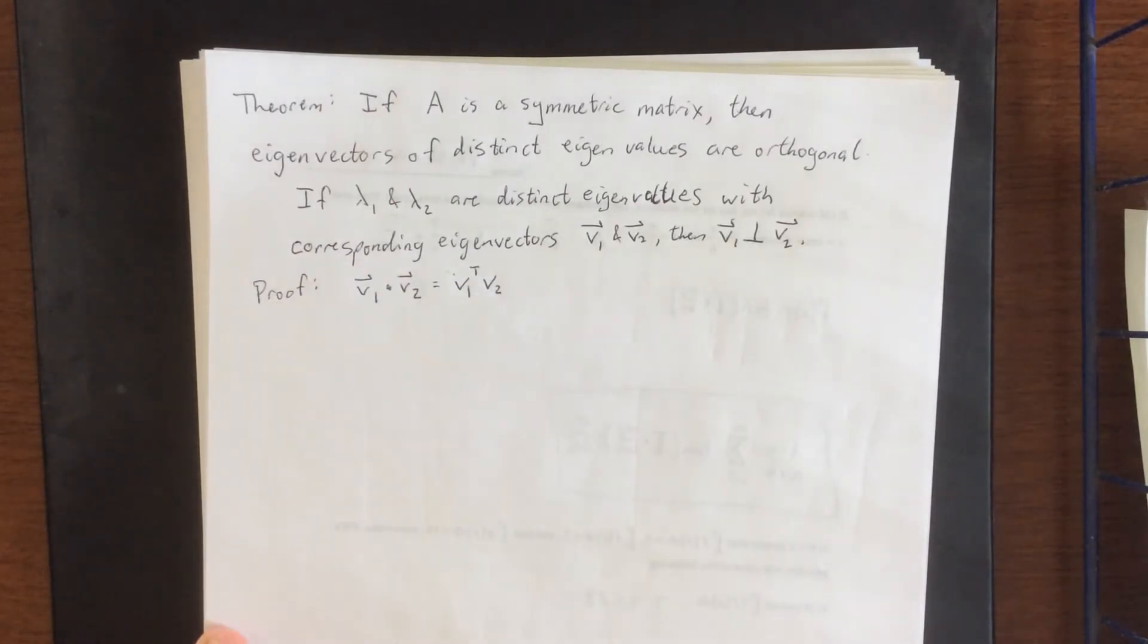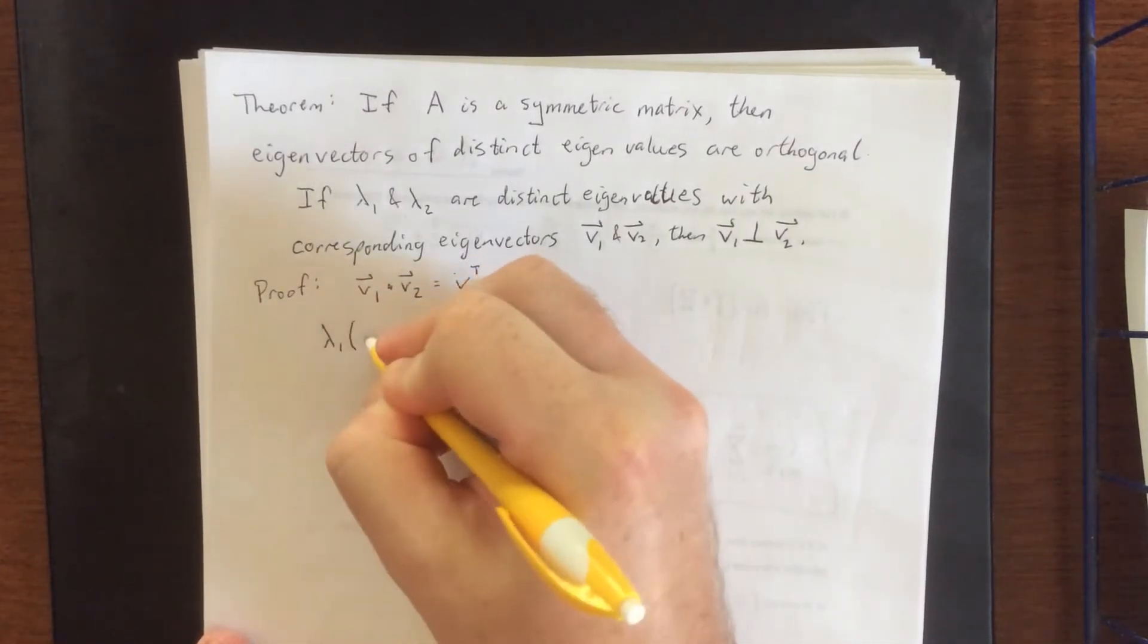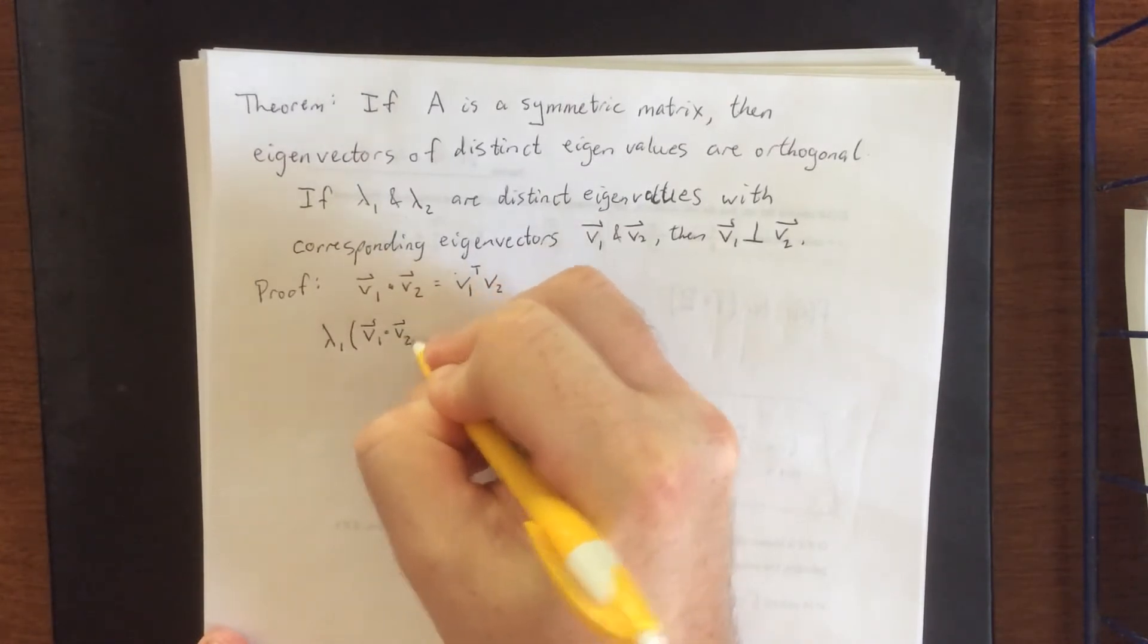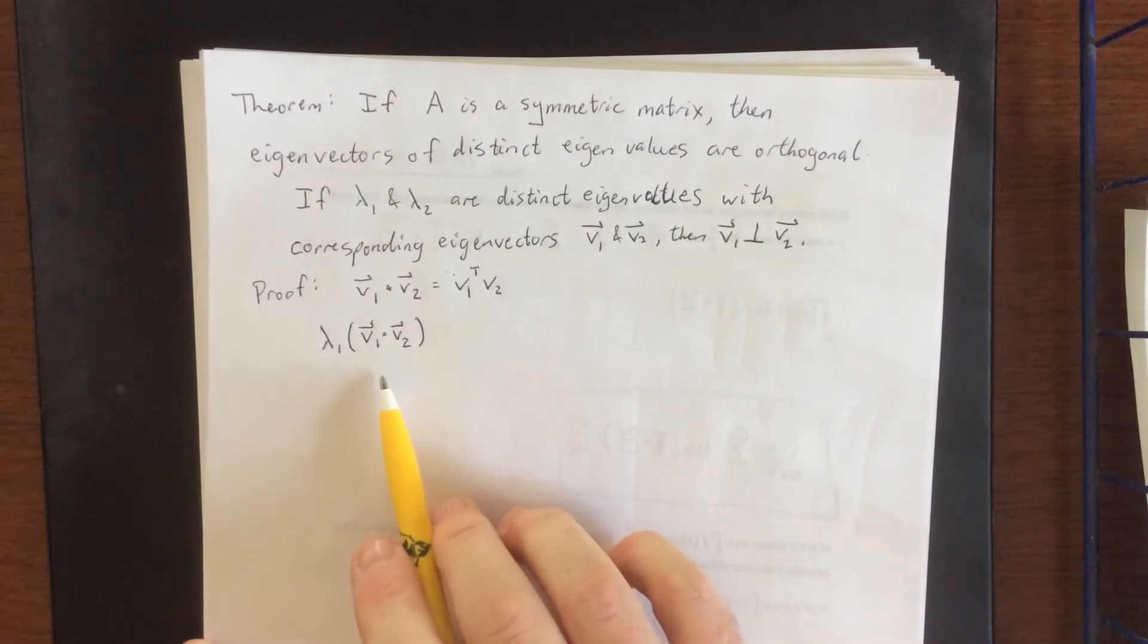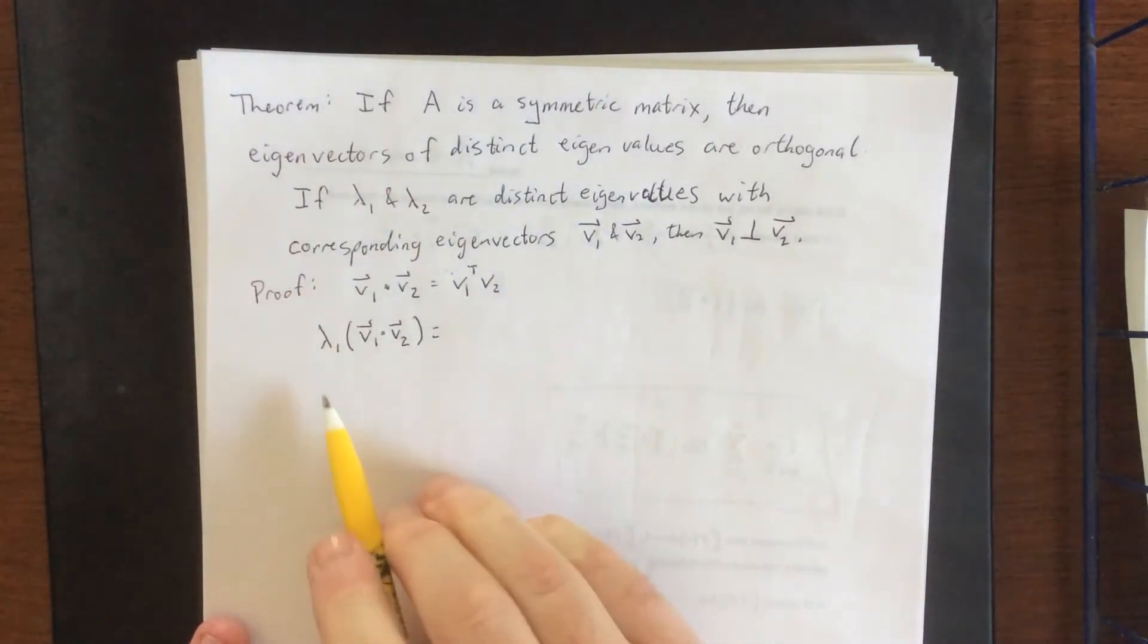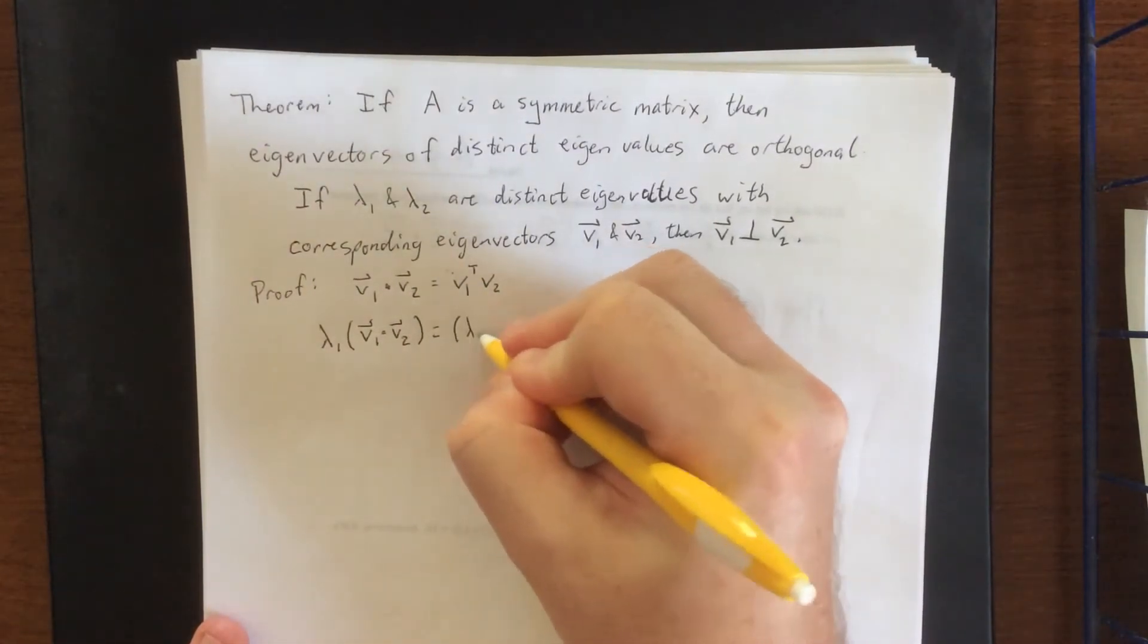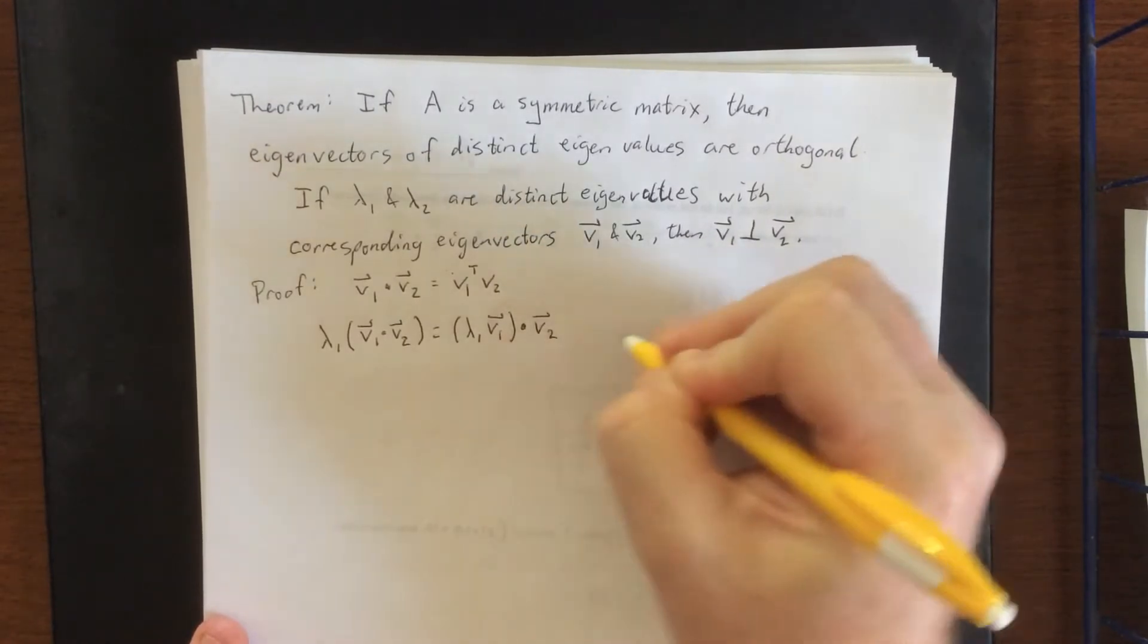So the way that this proof goes is I am going to start with the statement lambda 1 times the quantity V1 dot V2. What I'm going to try to show is that I can make this thing equal to lambda 2 times V1 dot V2. So the way that this works is first off I'm going to use the associativity of scalar multiplication with the dot product and say that this is going to be equal to lambda 1 times V1 dotted with V2.